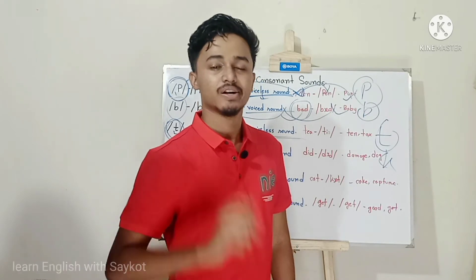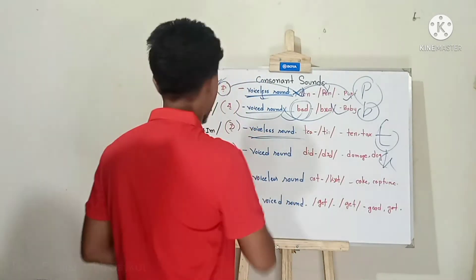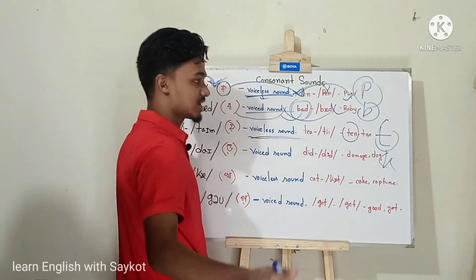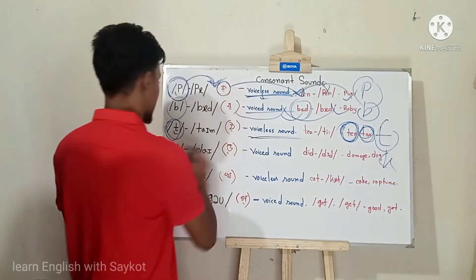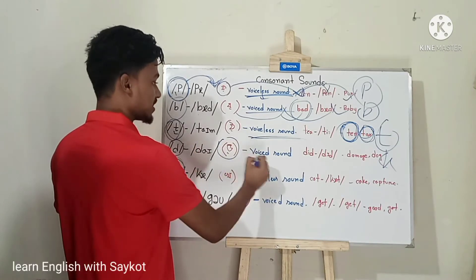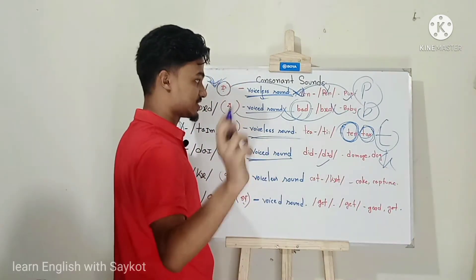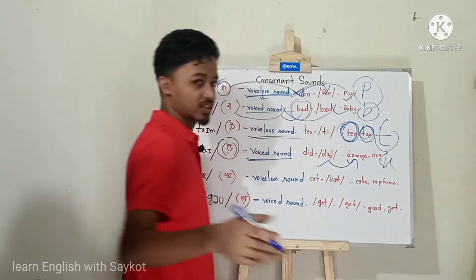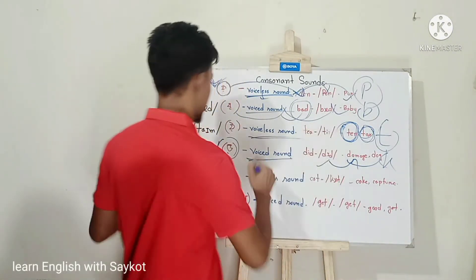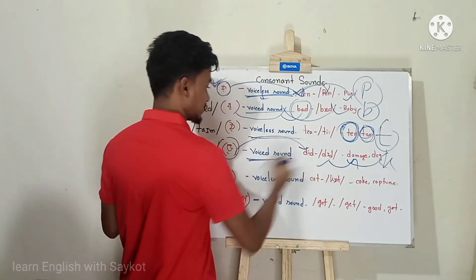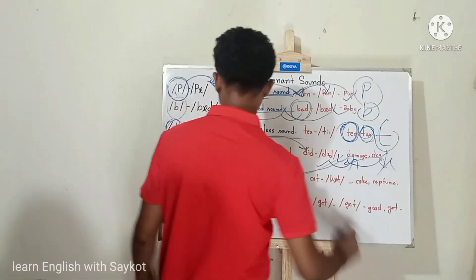Ta, ta, ta, ta, ta — tax, ten, ten, tax. Da — not be da, but da. This is a voiced sound: da, da, da, da, da, da, da. 'Damn' — not 'damage,' but 'damage.' Da, da, da, doc, da, da. Please repeat and imitate me: da, da, da, da, damage, da, da, doc, doc, doc.